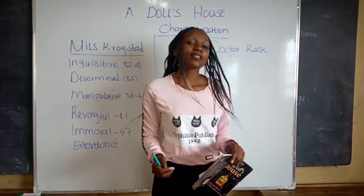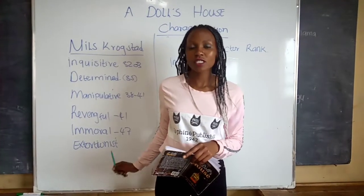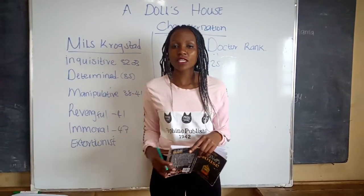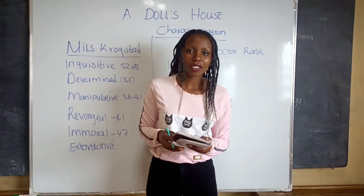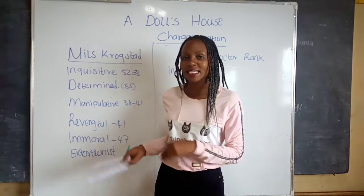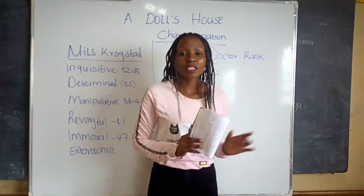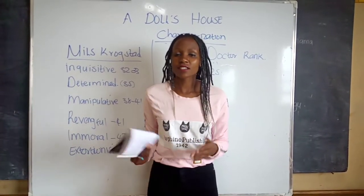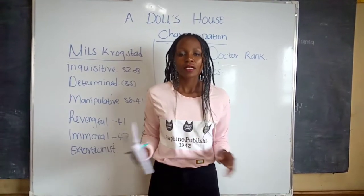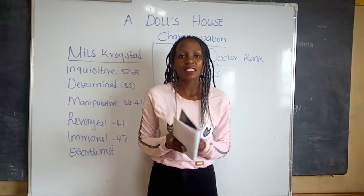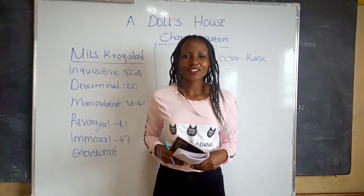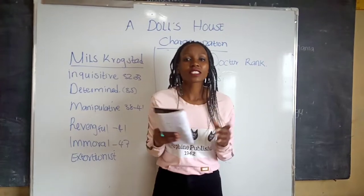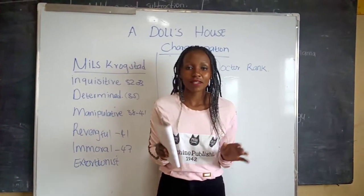And next, he is an extortionist. An extortionist is a person who uses threats, violence, or force in order to get what they want. Krogstad is threatening Nora: if she does not use her influence on her husband, he is going to reveal her secret of borrowing the money. So in that case, we can say he is an extortionist. That is all about Nils Krogstad. If you have any other trait of Krogstad in Act 1, just let me know.